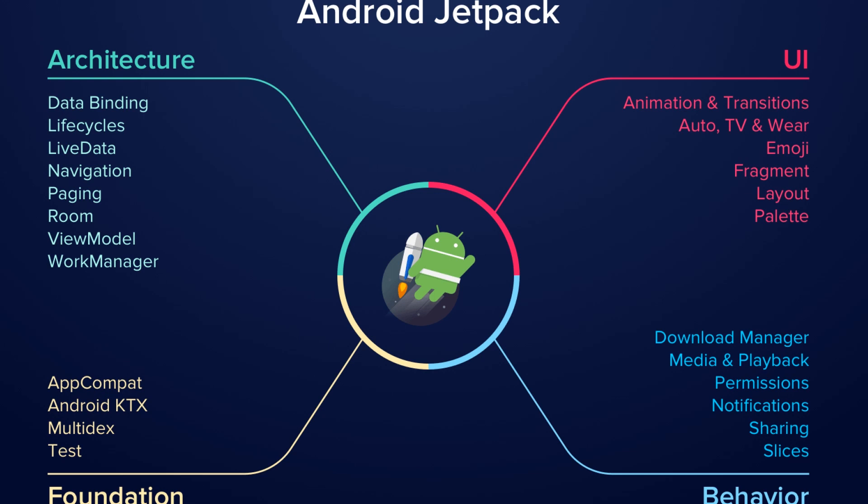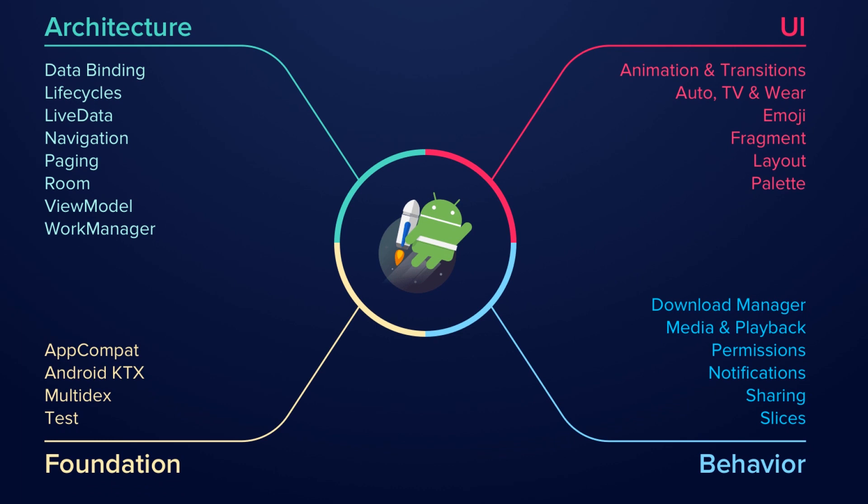The UI component includes animation and transitions, auto, TV, wear, images, fragment, layout, and palette. The foundation section consists of app compact, Android KTX, multi-dex, and test. The behavior section includes download manager, media playback, permissions, notifications, sharing, and slices.